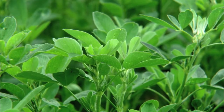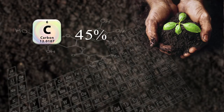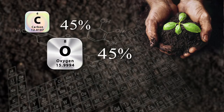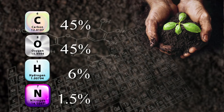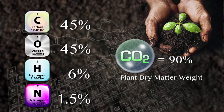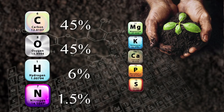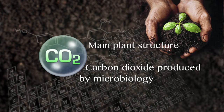When we look at plant dry matter weight and examine the components within that plant: carbon occupies 45% of the plant's dry matter weight, oxygen another 45%, hydrogen 6%, and nitrogen on average about 1.5%. When you look at this, just carbon dioxide is responsible for at least 90% of the total plant's dry matter weight. Your other elements such as magnesium, potassium, calcium, phosphate, and sulfur comprise about 2%, but the main structure within our plant is CO2, carbon dioxide, produced by microbiology.